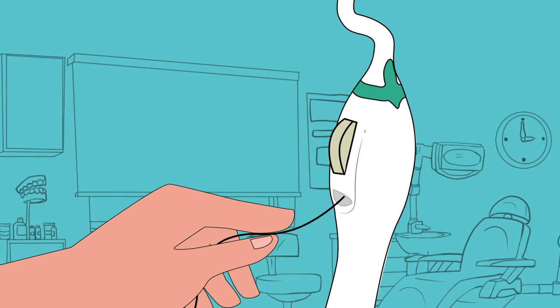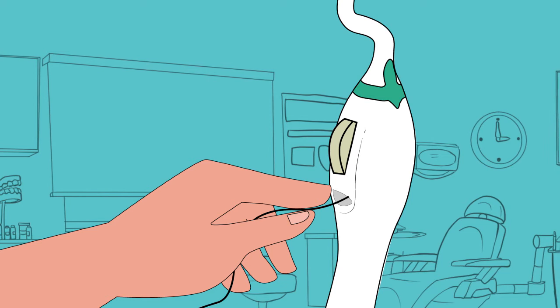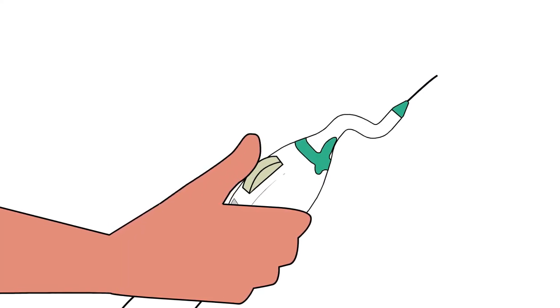Insert the AutoFlosser floss leader section into the loading area until it meets slight resistance. Turn the drive wheel in a direction away from the tip to move the leader end to the exit of the AutoFlosser tip.